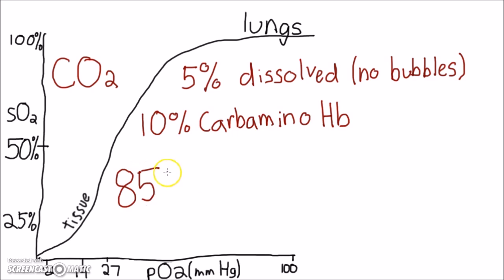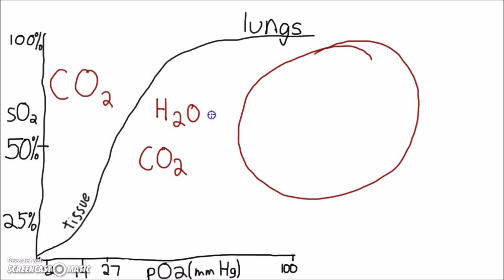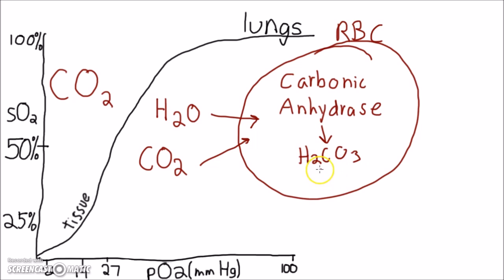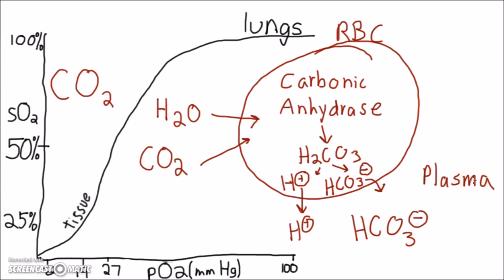Finally, the vast majority, about 85%, of CO2 is transported as bicarbonate in the plasma. CO2 and H2O combine in the red blood cell because of the catalyst carbonic anhydrase to become carbonic acid, H2CO3, which then dissociates into H plus and bicarbonate. The bicarbonate then leaves the cell and is mainly found in the plasma. In this way, CO2 can be thought of as an acid because it so easily becomes carbonic acid in the blood.